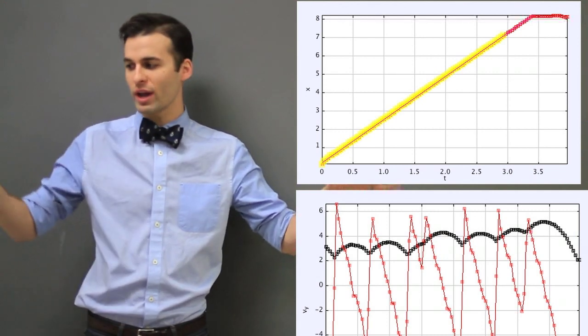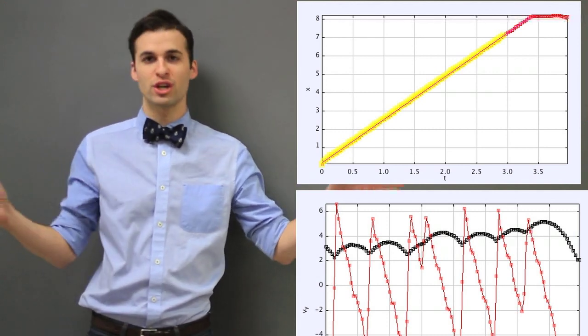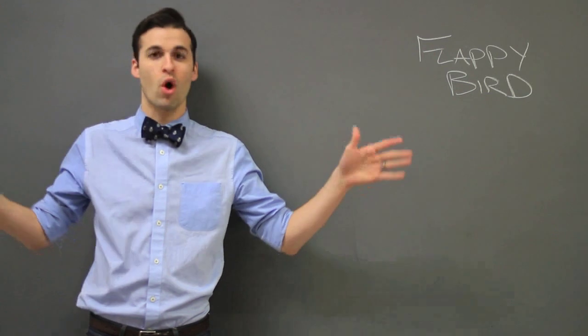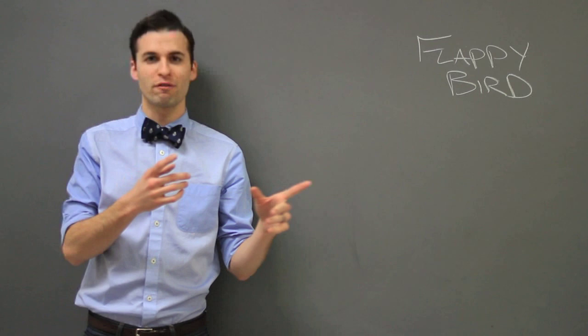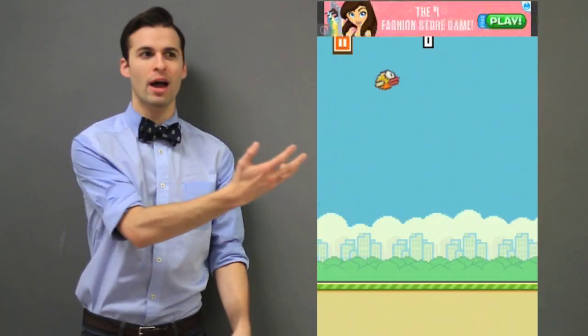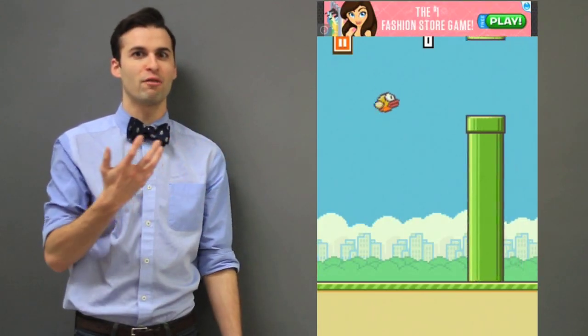That means that either his wings have some kind of gyroscopic mechanism to only flop up, or he isn't flying forward at all, but the pipes and everything are flying forward to him.